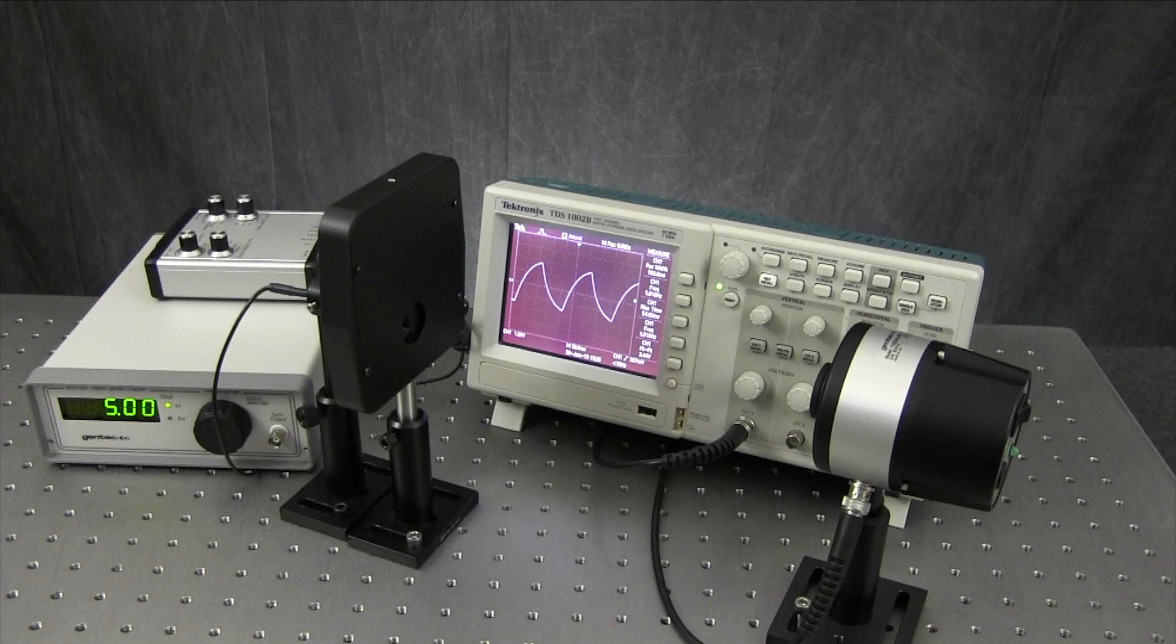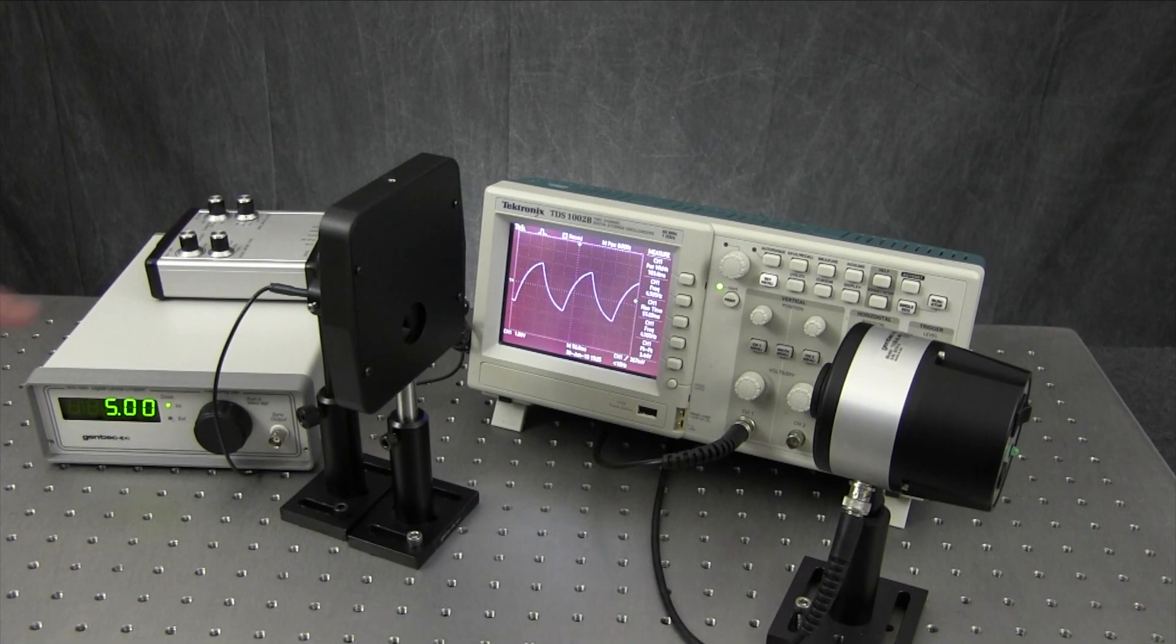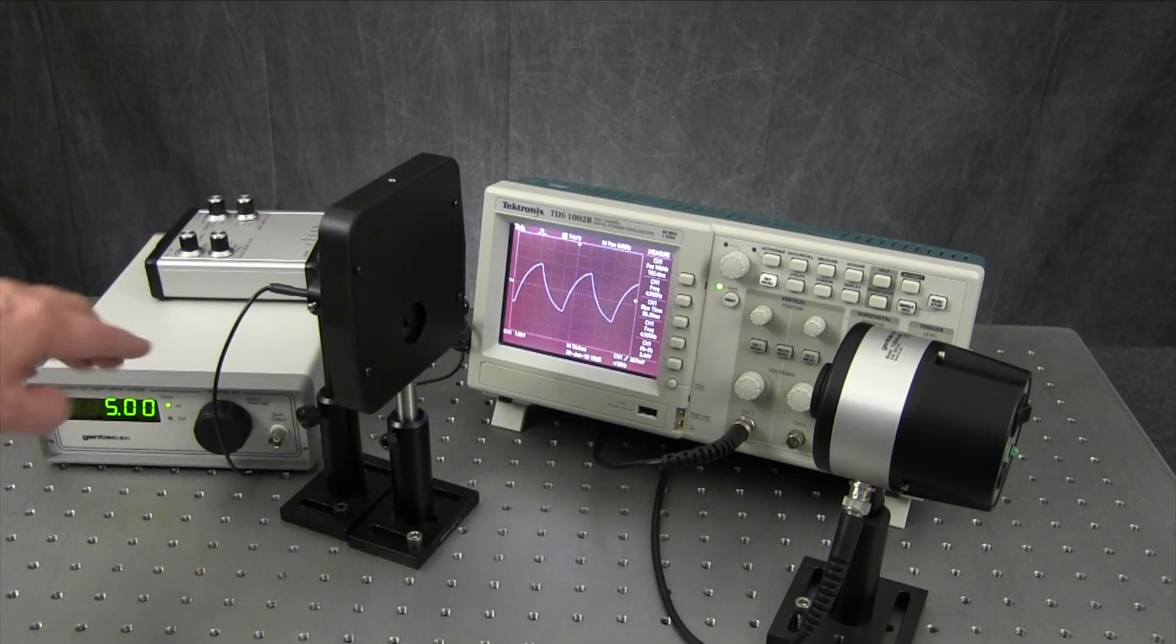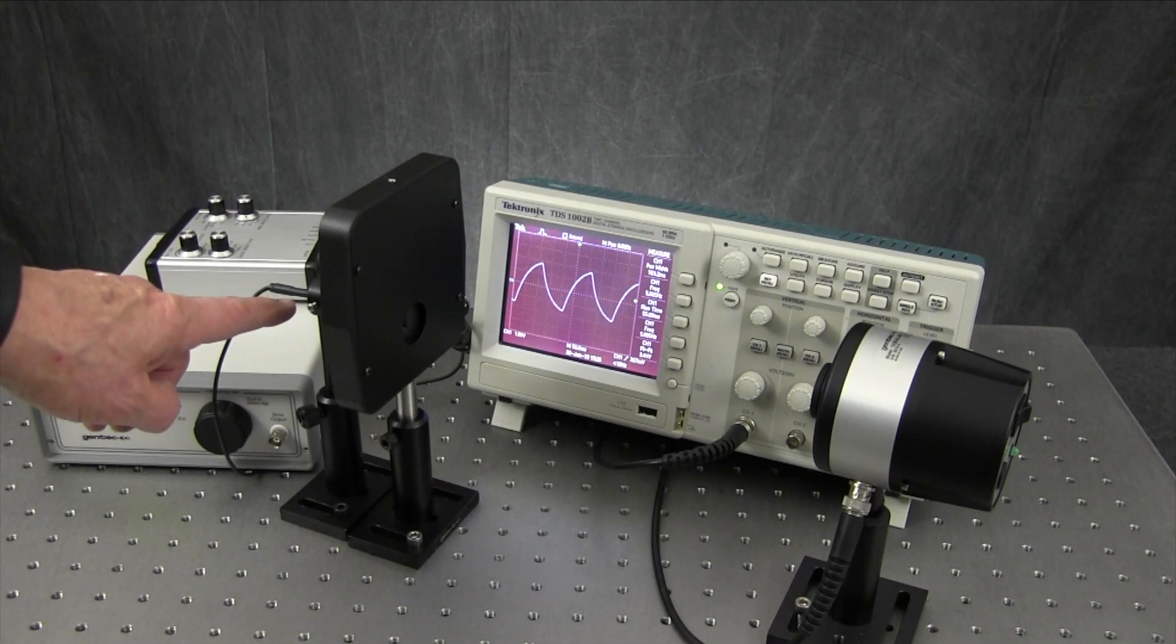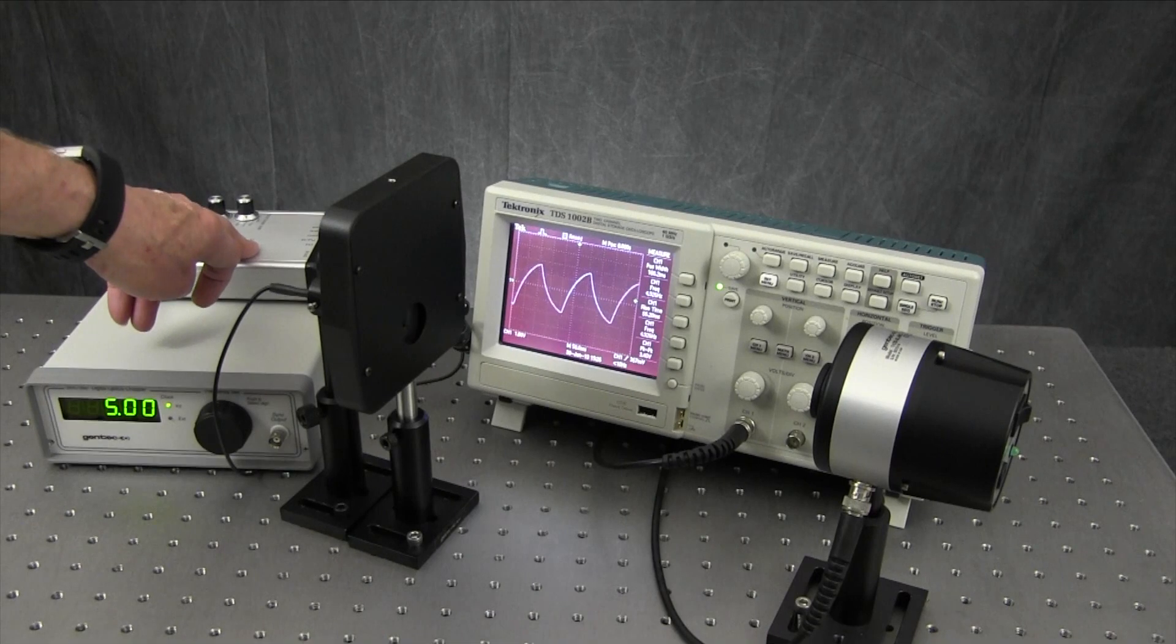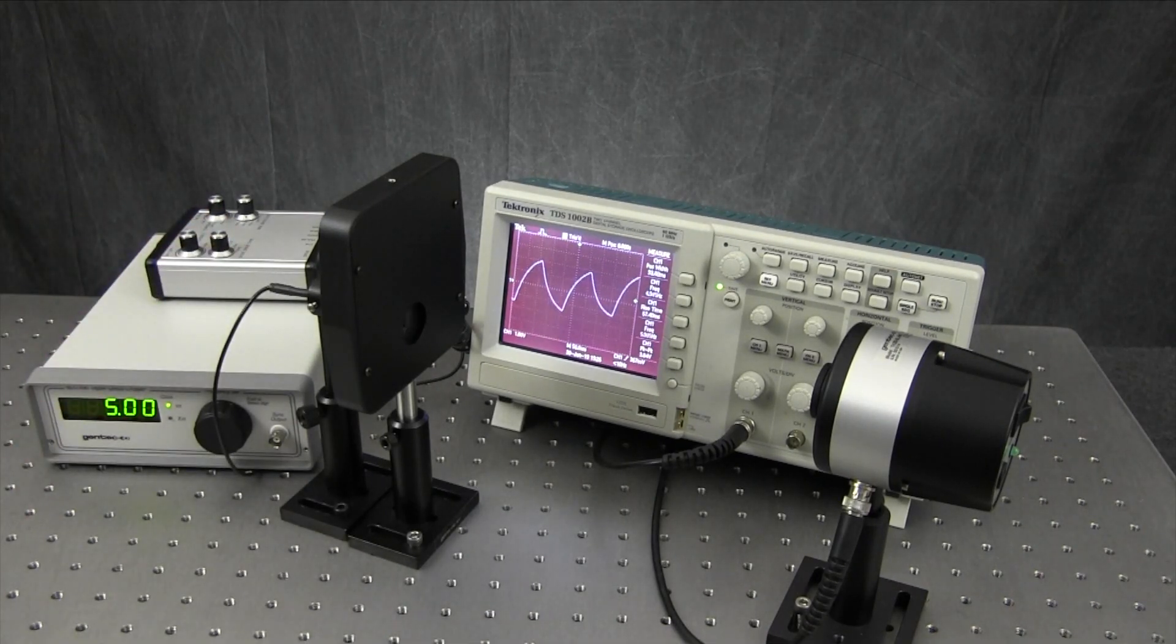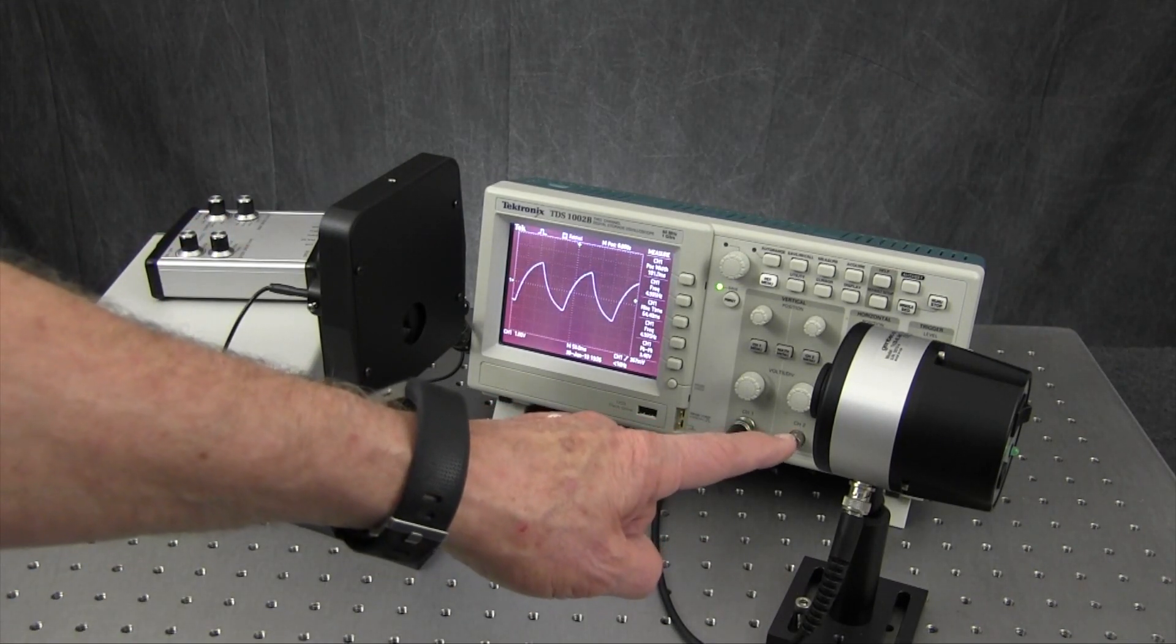So now let's take a look at the optical setup I'm using. We have an optical chopper and a controller set to 5 Hertz, a red laser diode and power supply driving the laser in CW mode, and our Terahertz 5i BLBNC with a digital scope.